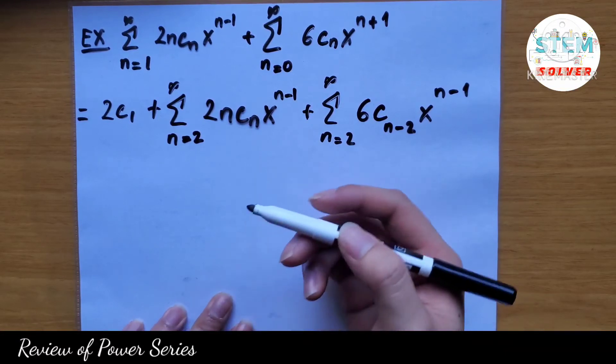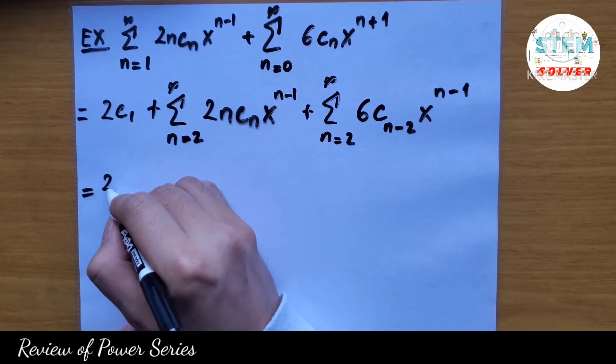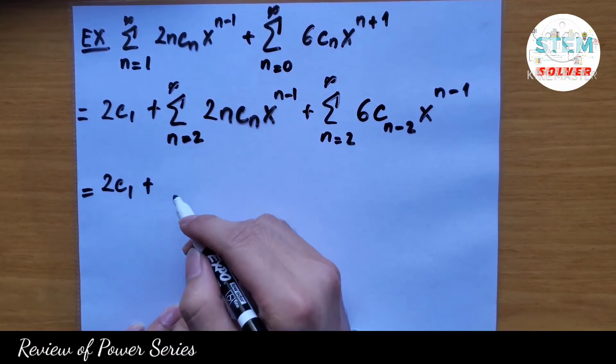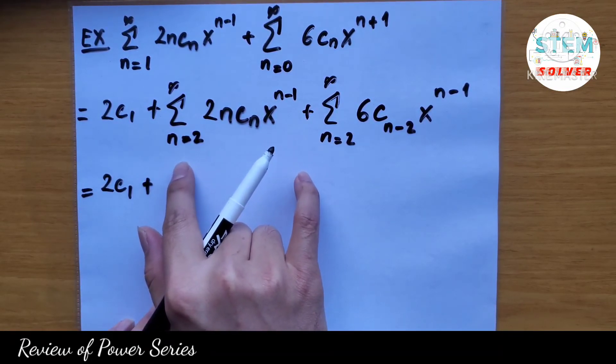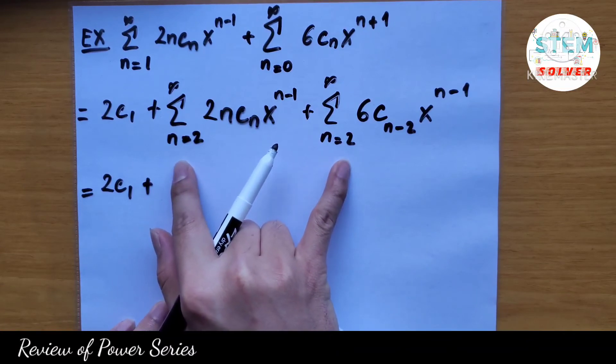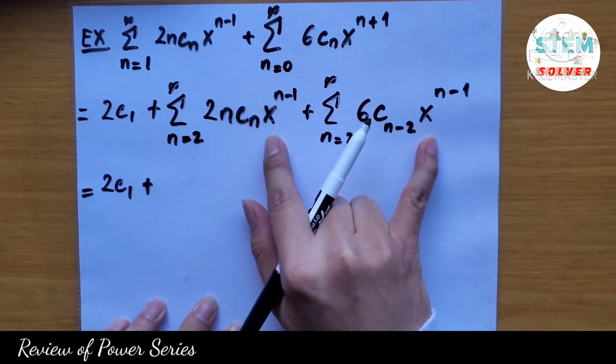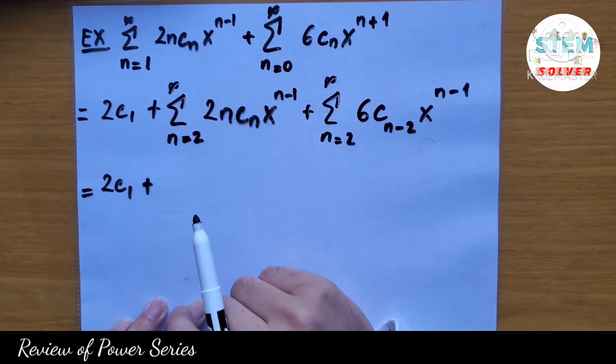Alright, now we're going to combine like terms. So I have only 2c1, just rewrite it, plus: now after you re-index, you're gonna have n equal 2, n equal 2, and you're gonna have the same x to the same power, which is x to the n minus 1.